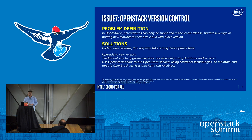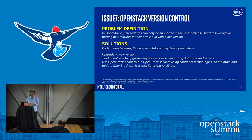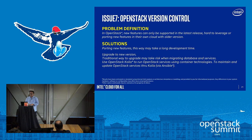The last problem is OpenStack version control. A common scenario is that people use different versions of big data applications — for example, different Spark cluster versions or different software stacks. But in OpenStack, new versions are only supported in the latest releases, making it hard for big data end users to leverage new features. Two possible solutions: backport new features, which is time-consuming and difficult, or leverage OpenStack Kolla to run OpenStack services using container technology. That's exactly what we are doing now, and it can help with OpenStack version control.